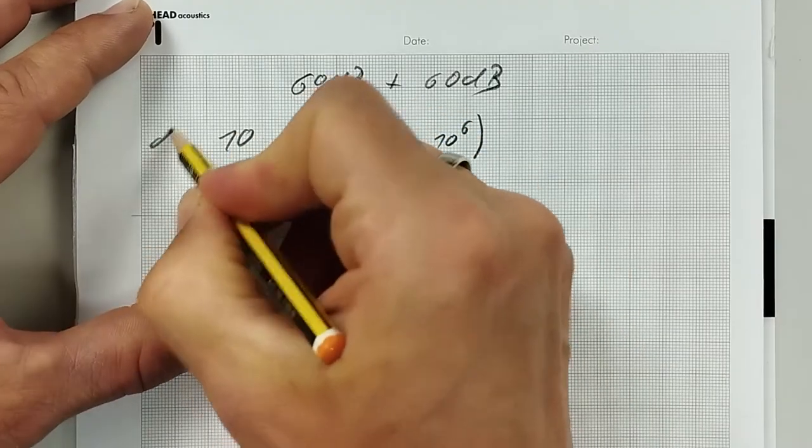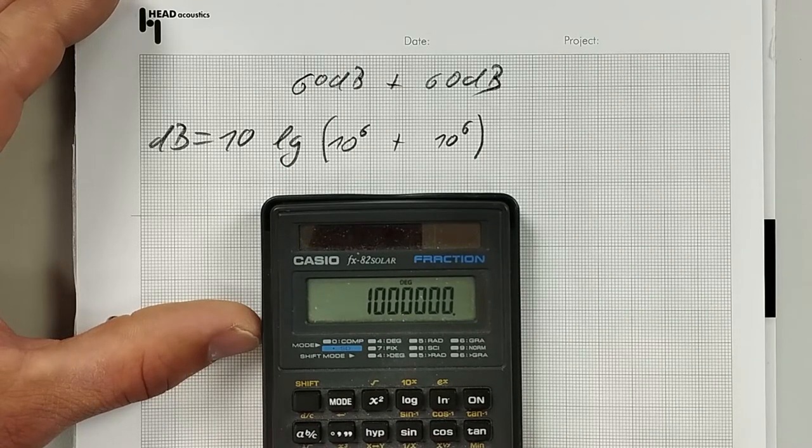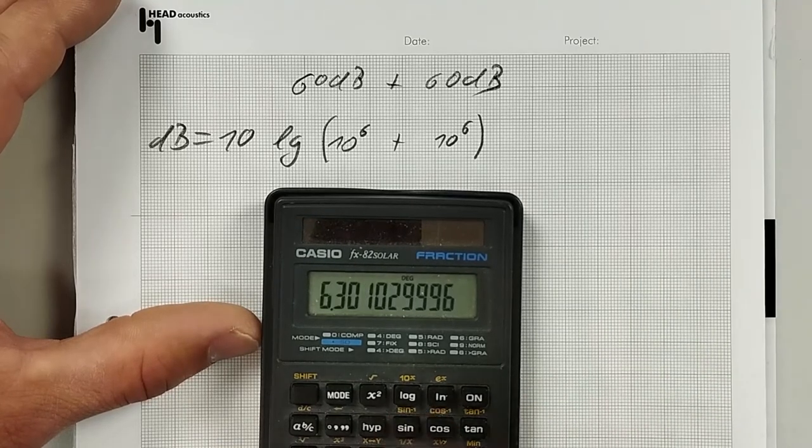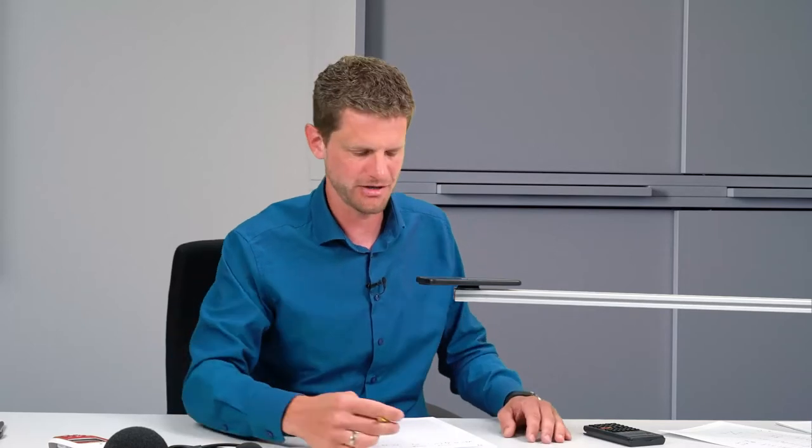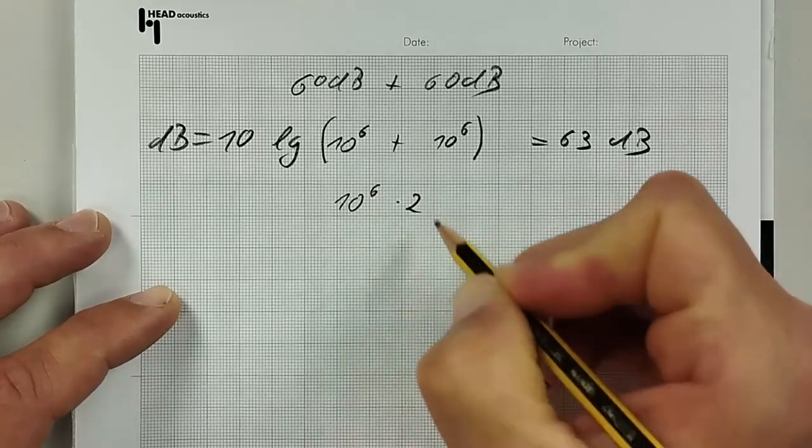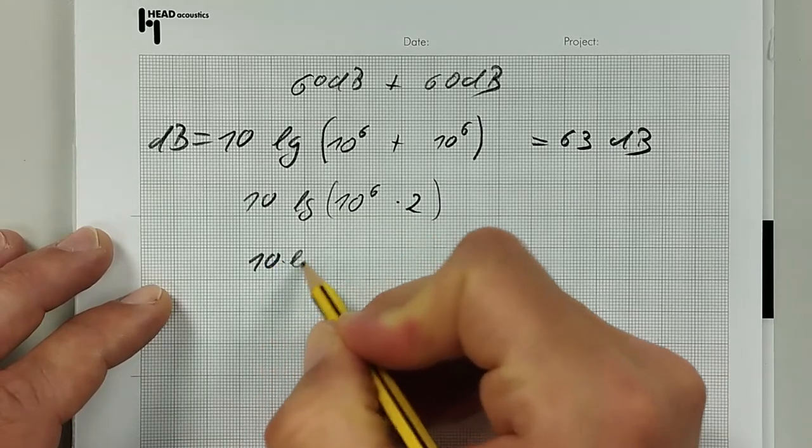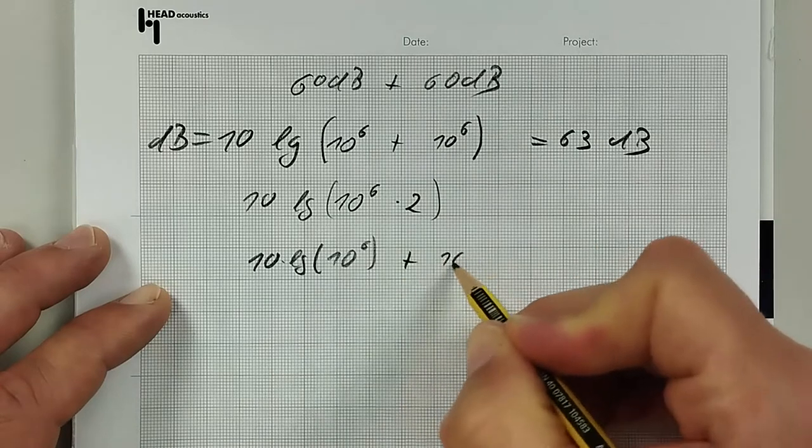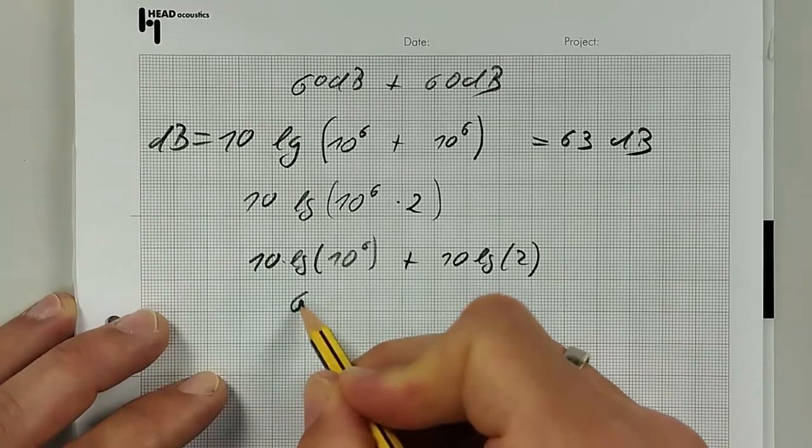So this is 10^6 plus 10^6. This is 2 million, logarithmic, multiply with 10: 63 decibel. By this you can always calculate the summation of decibel values. And now comes my little trick. You can also say this is 10^6 twice and have this in this calculation. There's a logarithmic rule that tells you if there's a multiplication, you can separate it to a plus. So actually you can calculate 10 times logarithmic of 10^6 plus 10 times logarithmic of 2.